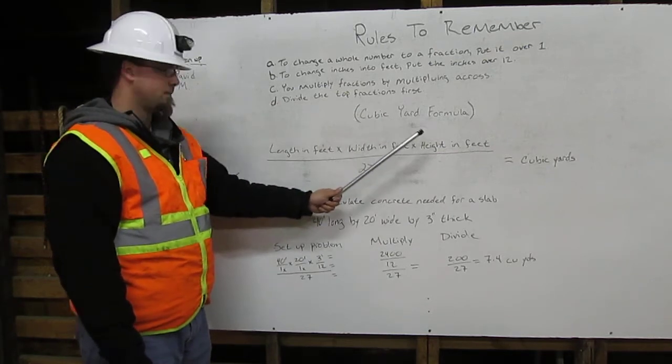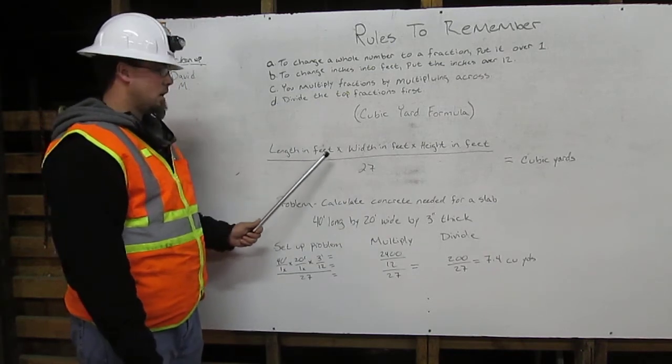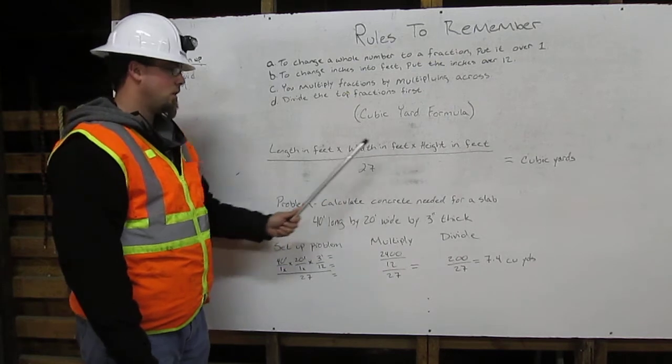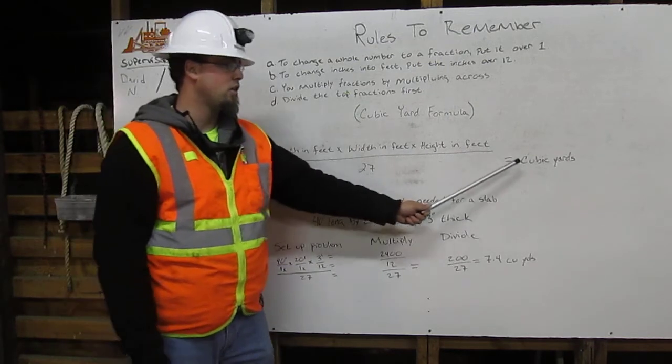Cubic yard formula. Going to times length in feet by width in feet by height in feet, over 27. That will equal our cubic yards.